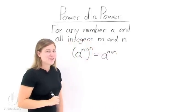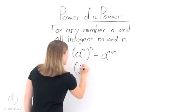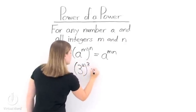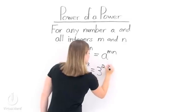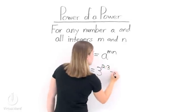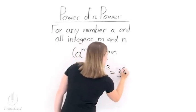So let's look at some examples. If we have 3 squared and take that to the third power, that's the same thing as 3 to the 2 times 3 power, or 3 to the sixth.